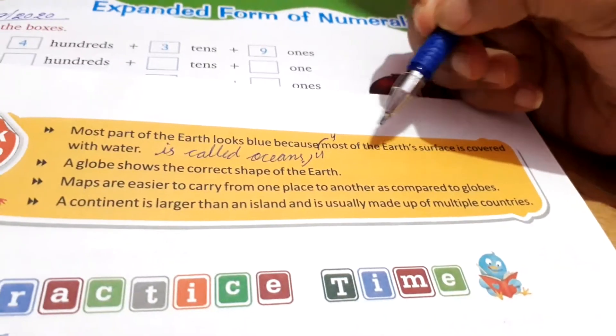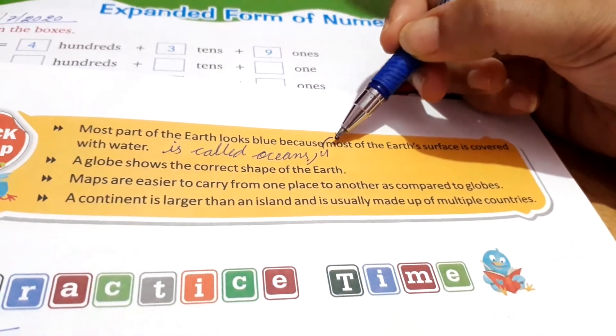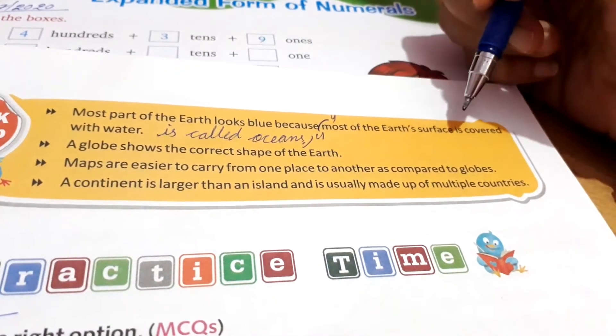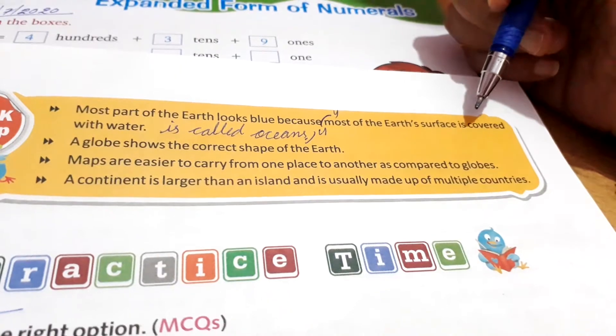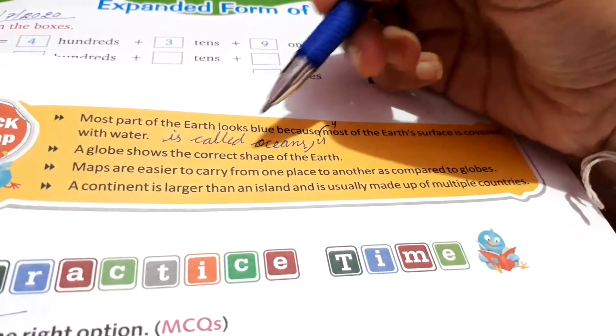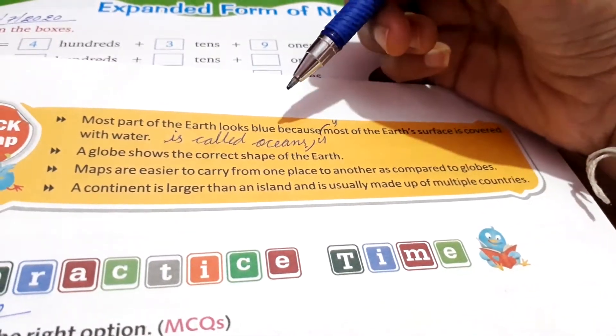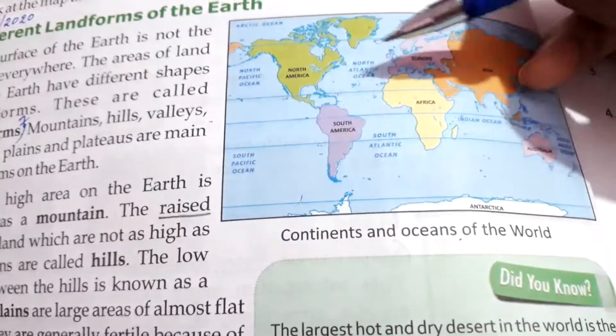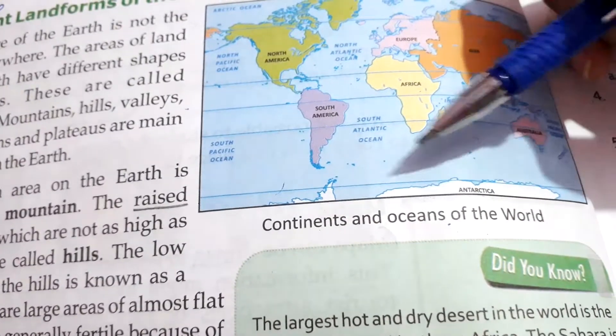So, what do we do, oceans, explain it. Same as it is, this portion, most of the part, M is a capital. Most of the part, most of the earth's surface is covered with water. It's called oceans. Where there is a lot of water, most of the part covered with water. It's called oceans, okay.